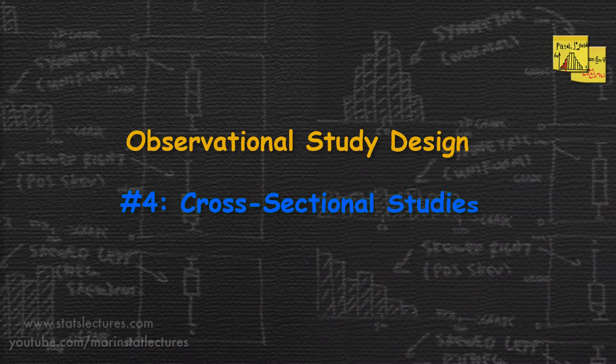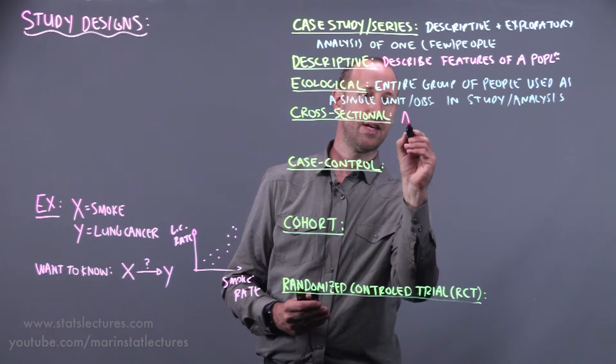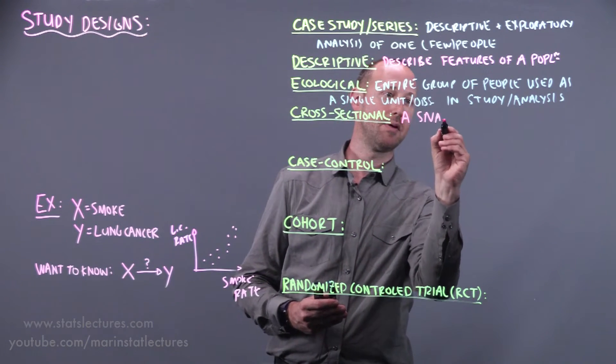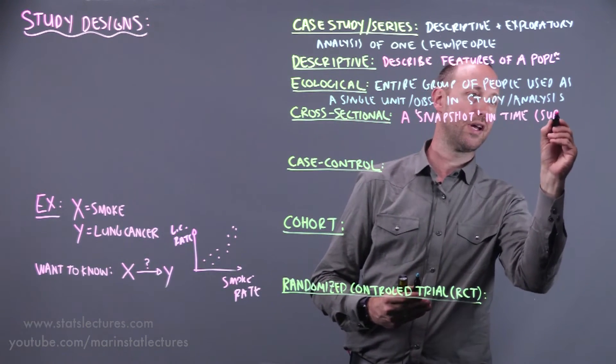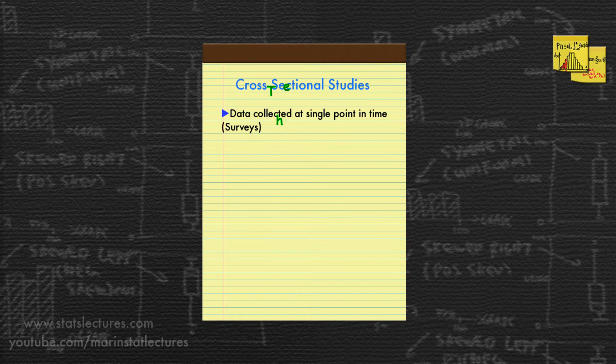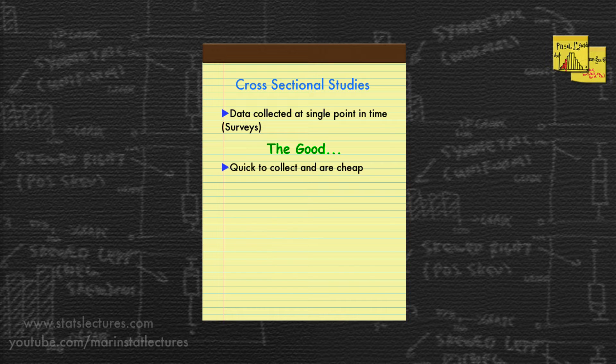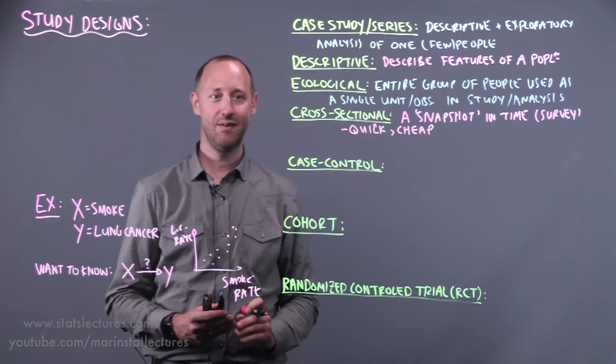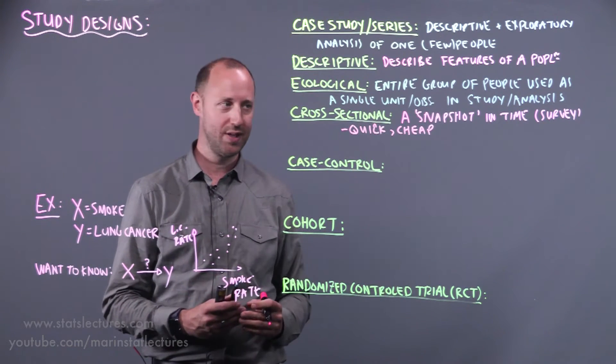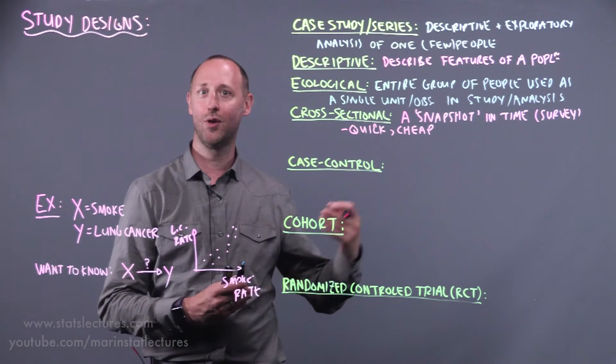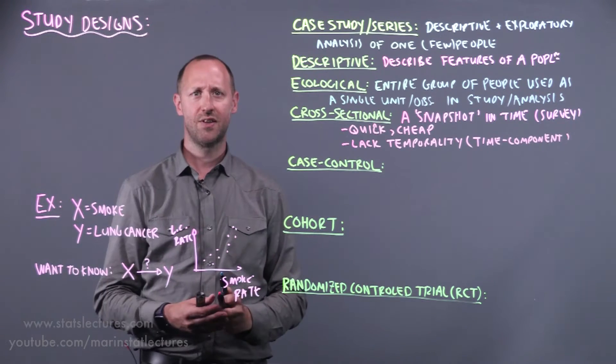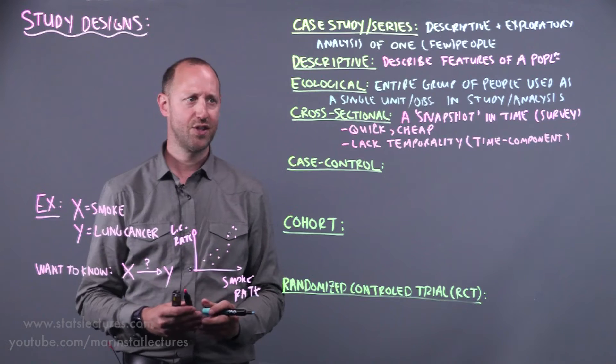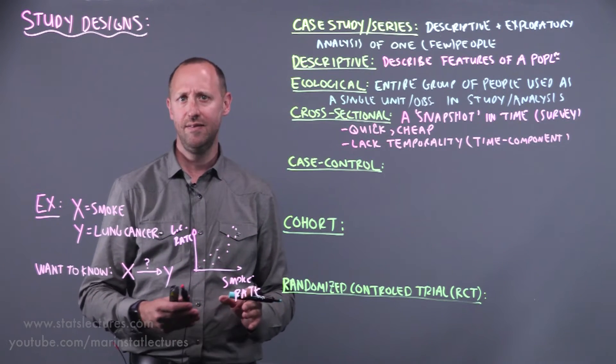Next up is the cross-sectional study. We can think of this as being a snapshot in time, or in other words, it's a survey. A few nice features of these: they're relatively quick to collect and relatively cheap. Nothing in the research world is quick or cheap, but relatively speaking we don't have to wait a long time to get a hold of the data. We don't have to follow people for years and years. These are things like really large health surveys, census data, these sorts of things.